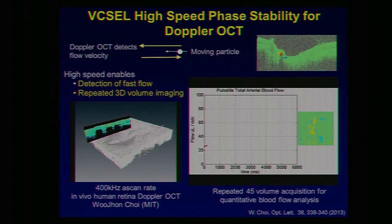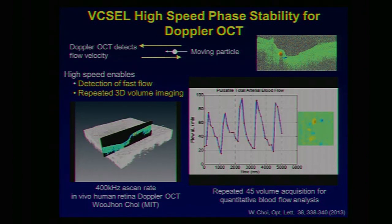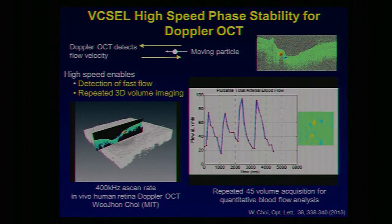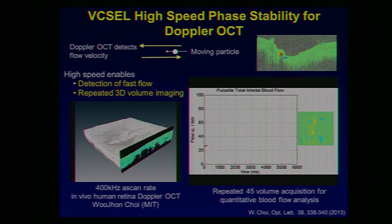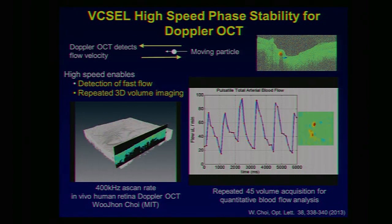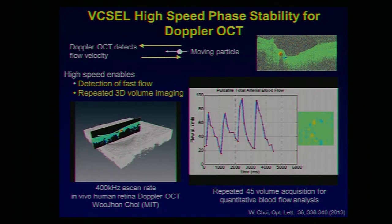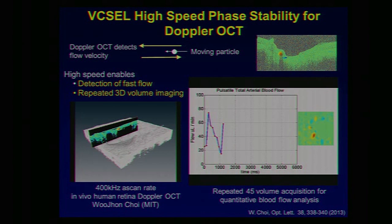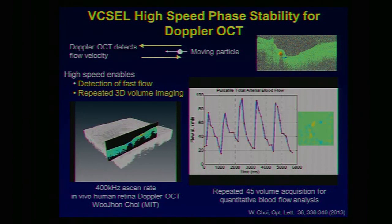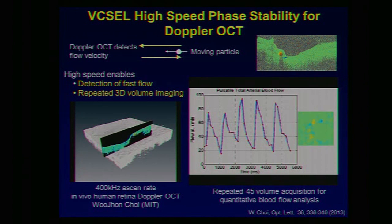High speeds can also be used for Doppler OCT, which lets you detect the velocity of a moving particle and measure blood flow in a living human eye. Using the VIXEL, the high speeds let us detect very fast flow. We scan a volume at the optic nerve head — where blood enters and exits the eye — so quickly that we can get multiple volumes in one cardiac cycle. This lets us see the pulsatility happening inside the human eye, with peaks of blood flow visible in the cross-section.